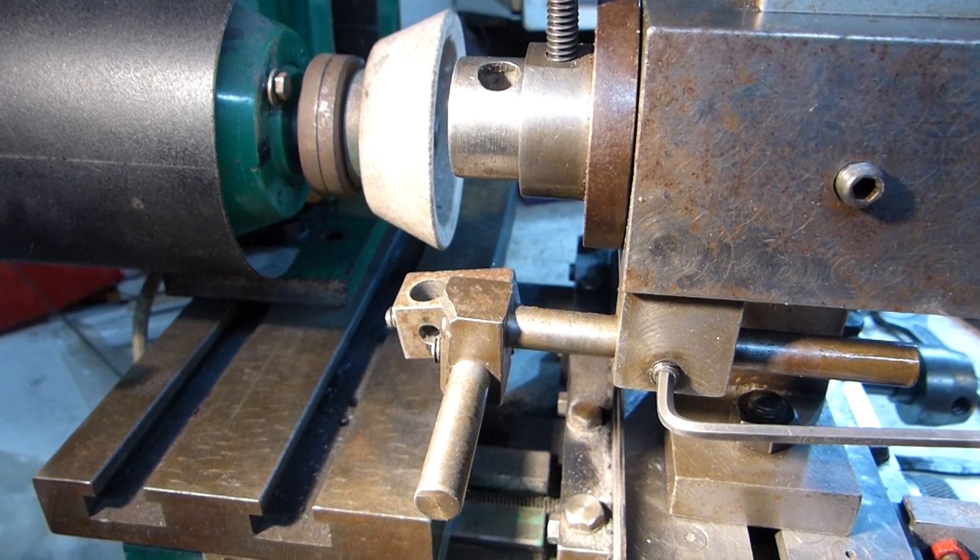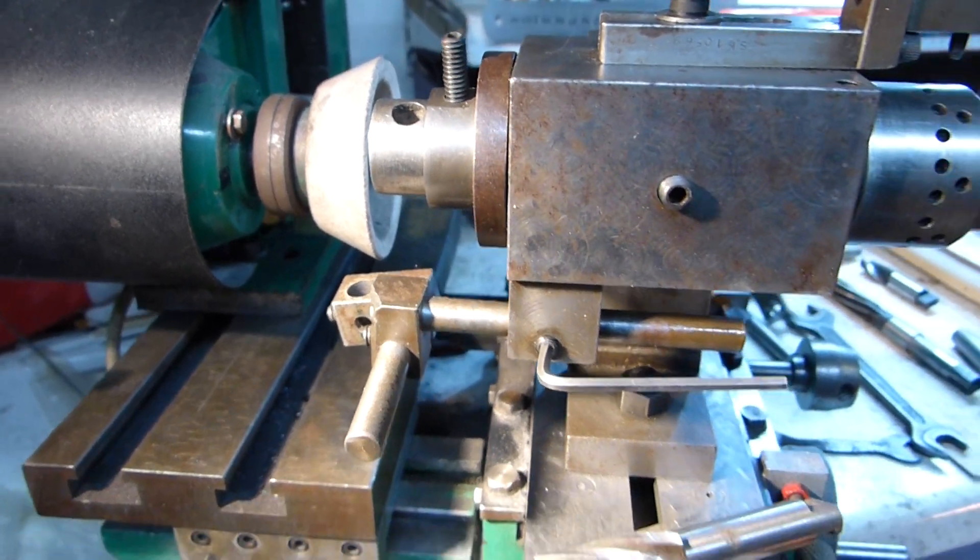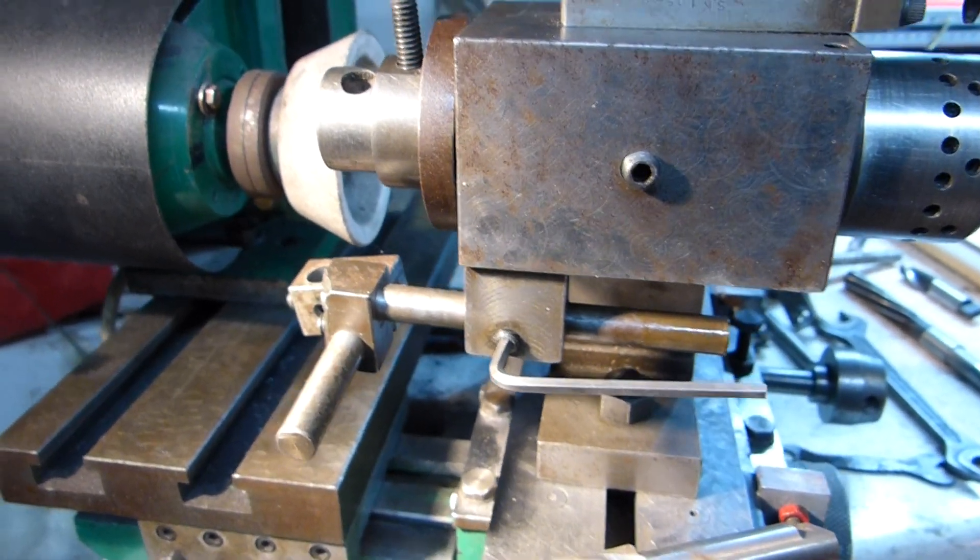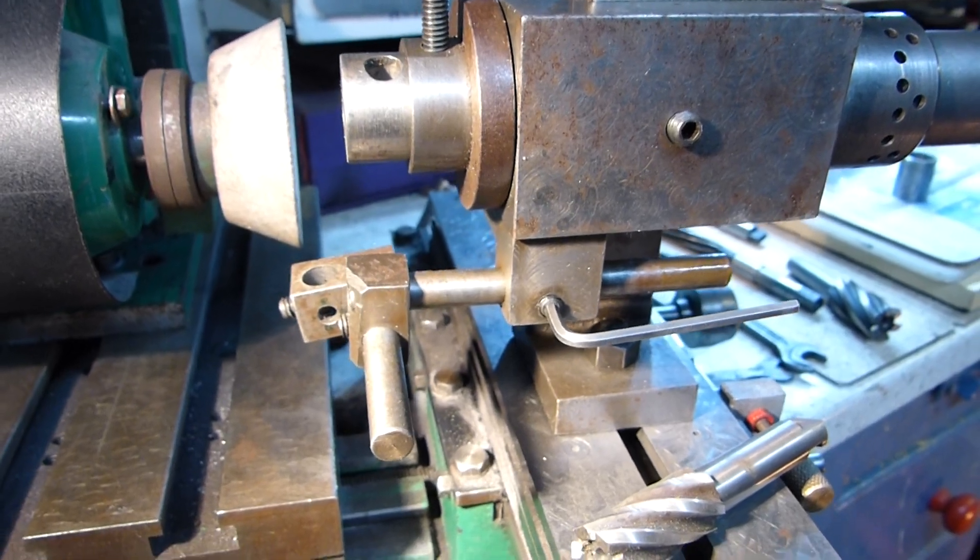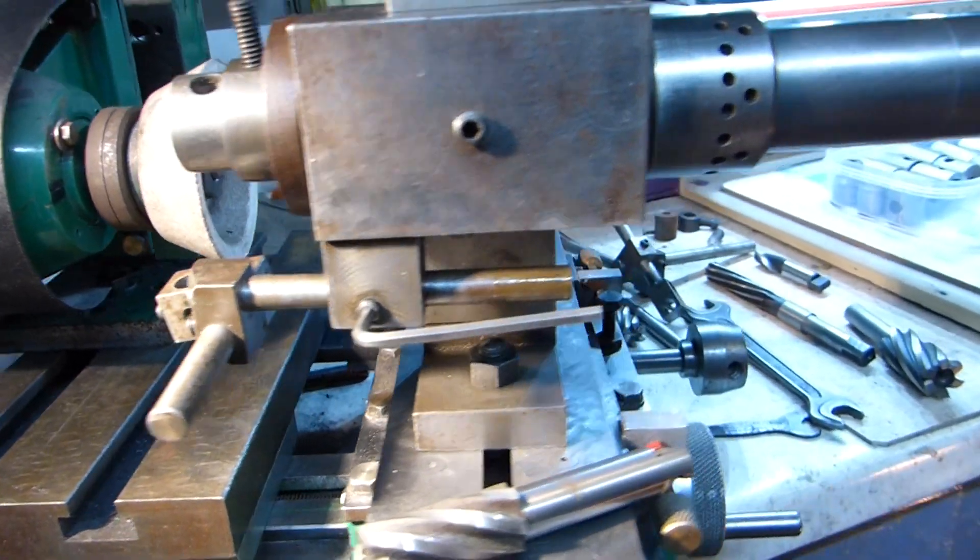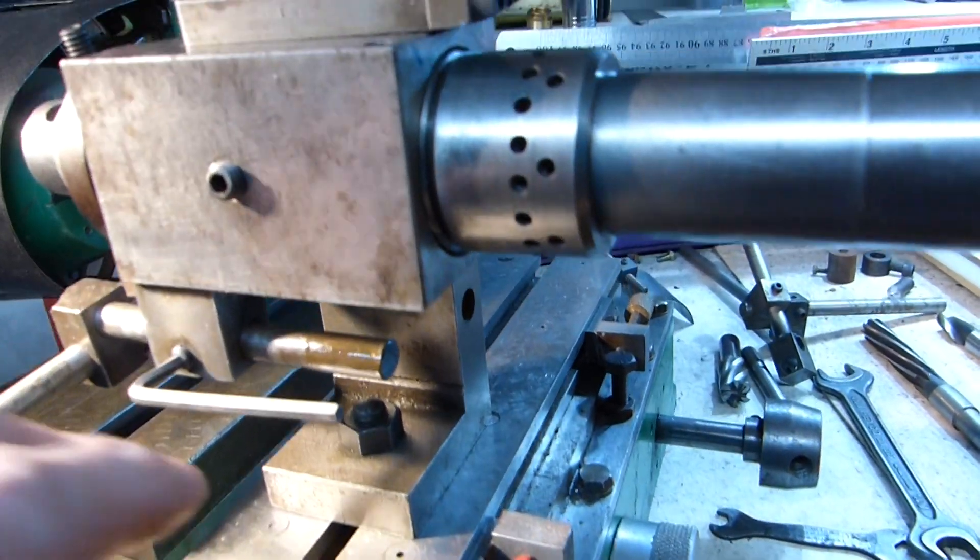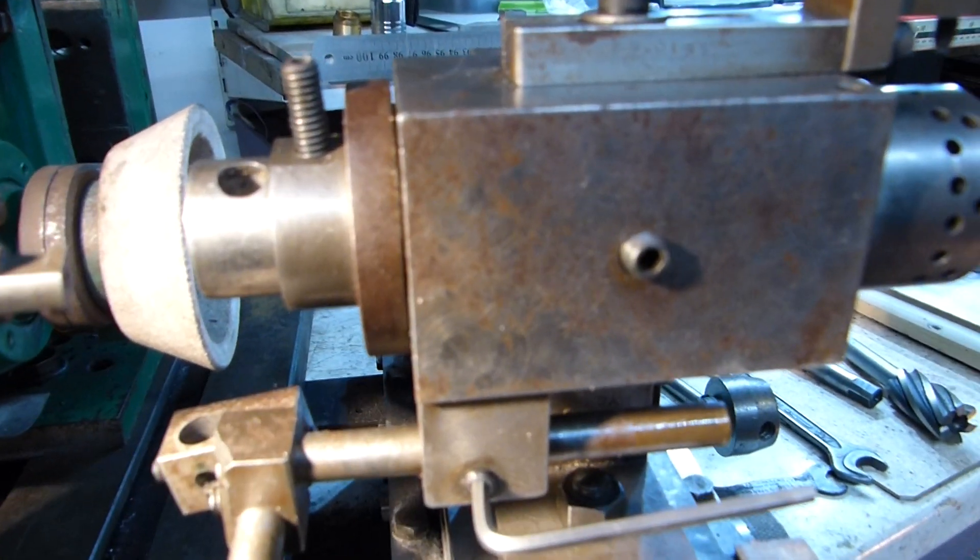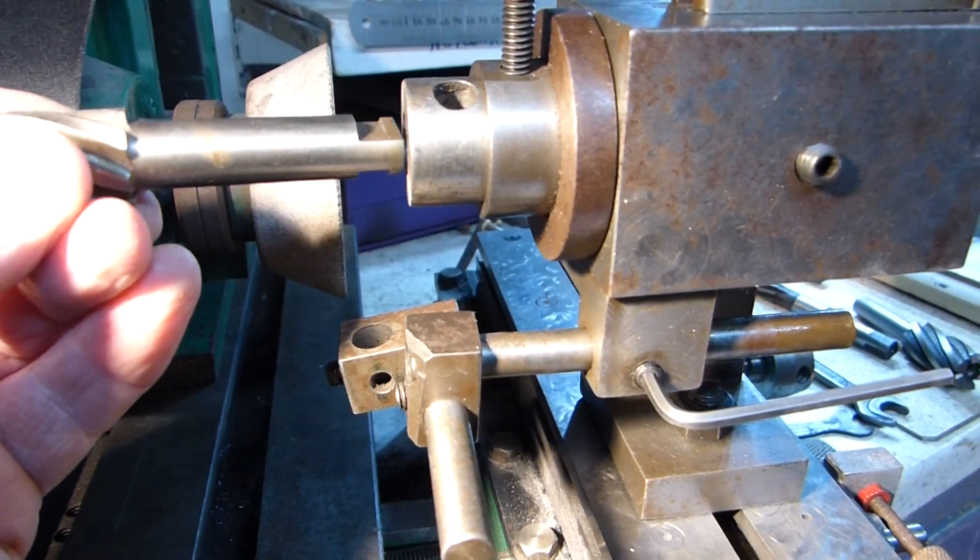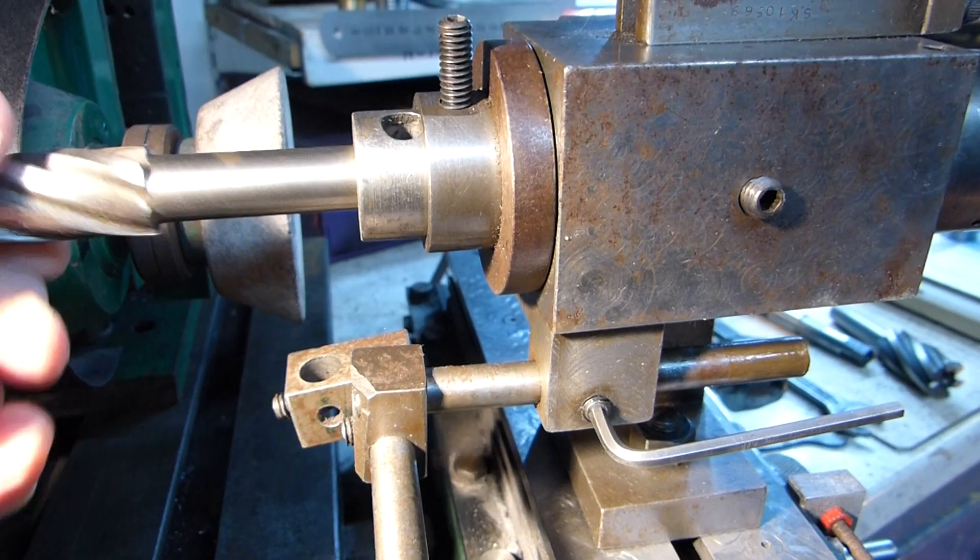Now this is the work head which I showed earlier in my previous video and I want to use this to sharpen the end teeth of the end mill which I've just reground. I use different sized bushes to take different shank sizes of various cutters.